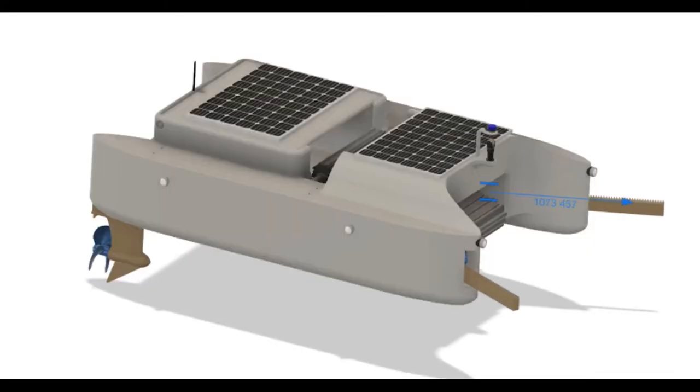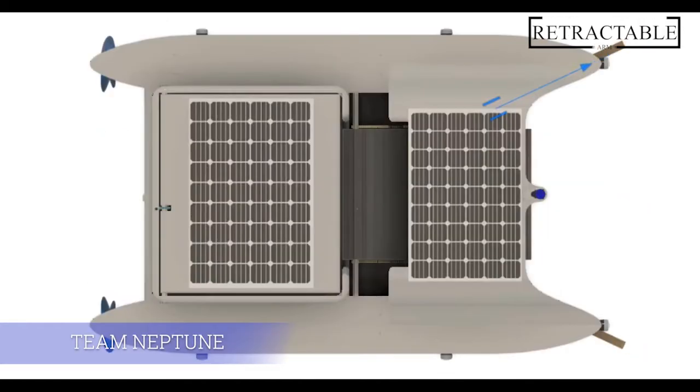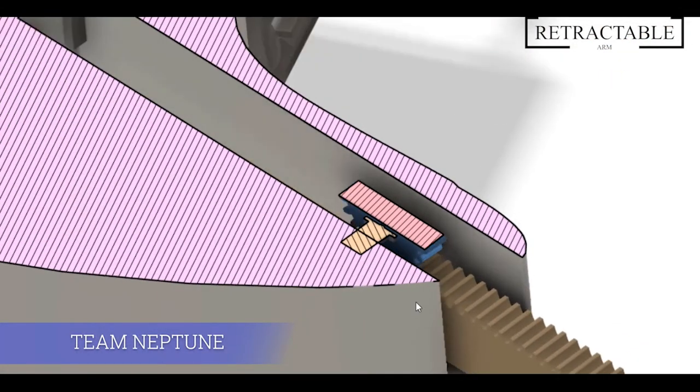We have another additional feature, which is a retractable arm. Through prismatic motion, it slides in and out. The purpose of this arm is to restrict the floating particles and force them towards the rolling belt.